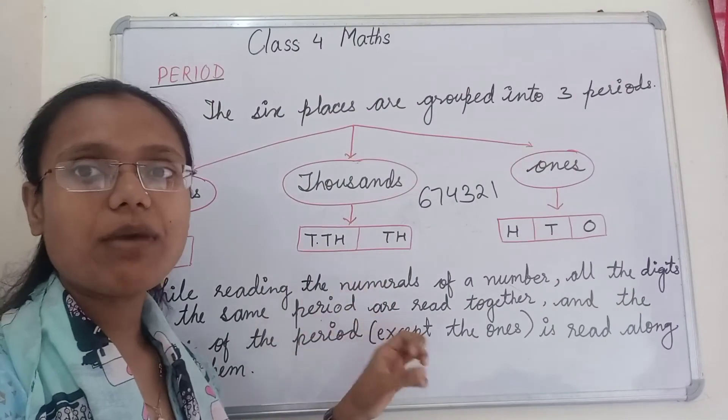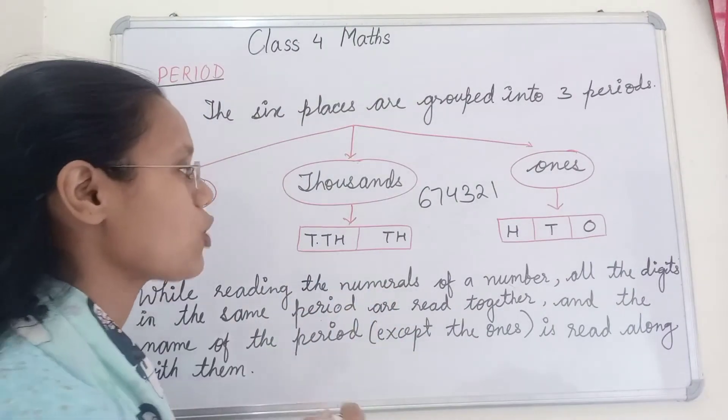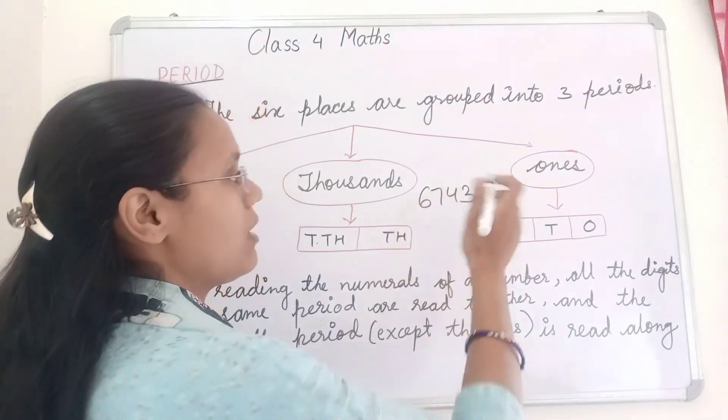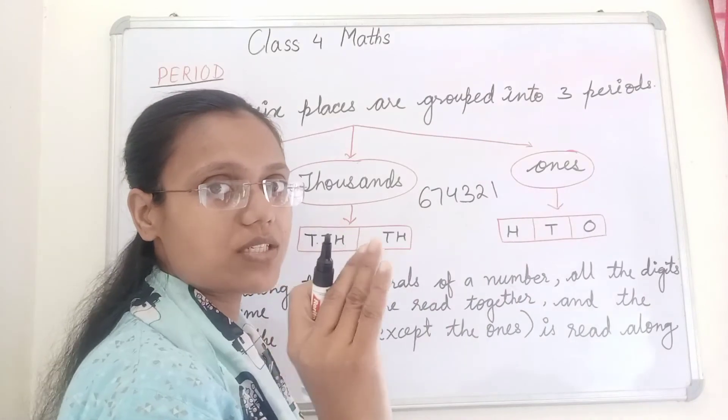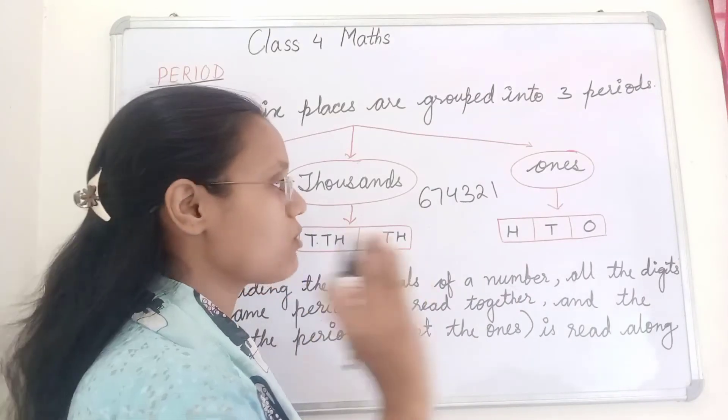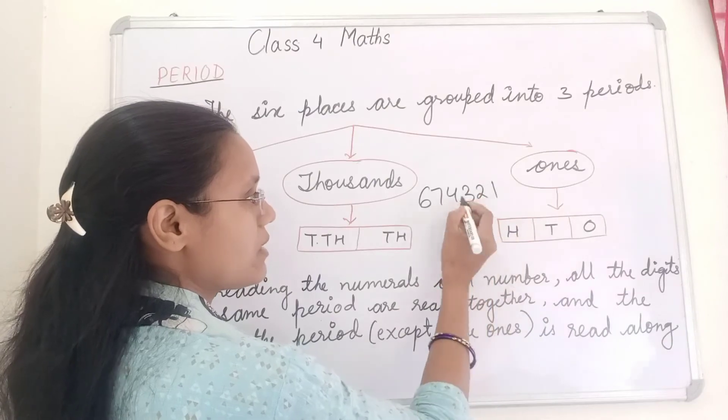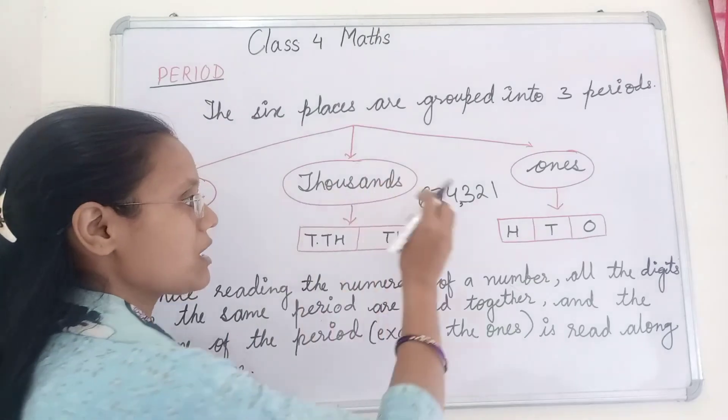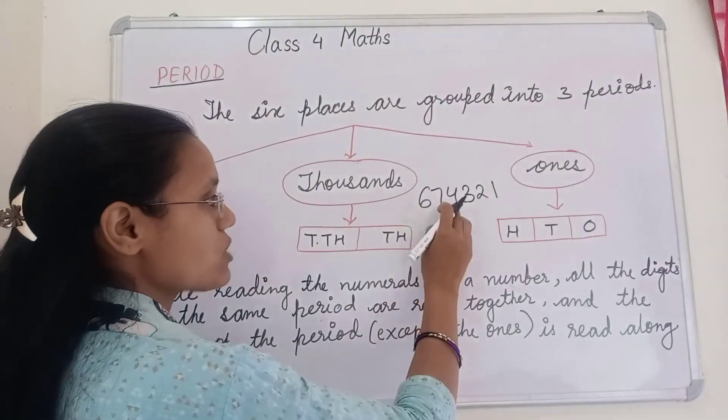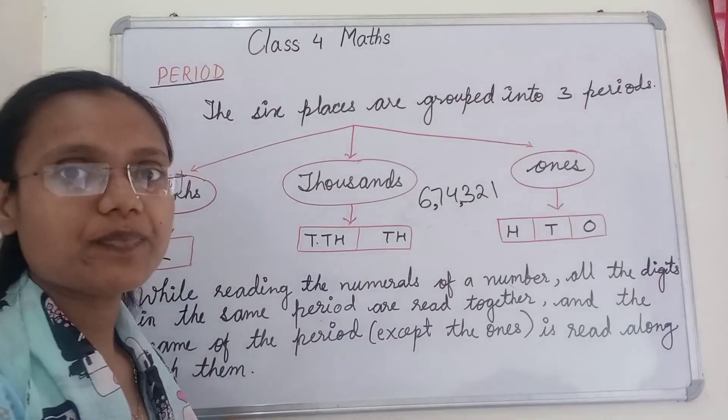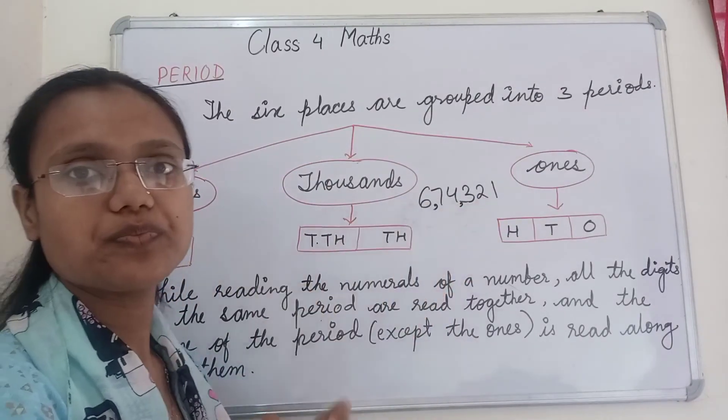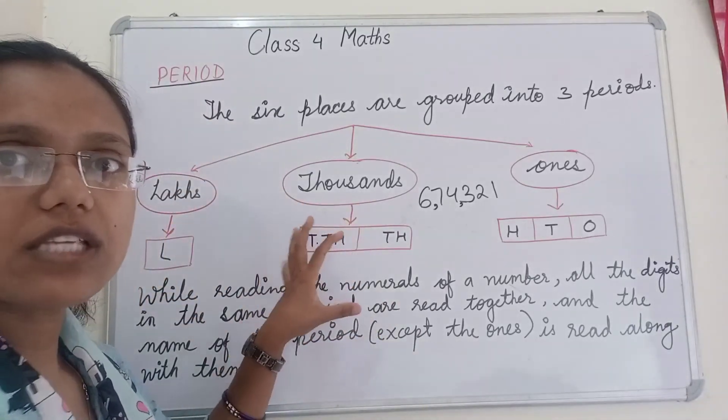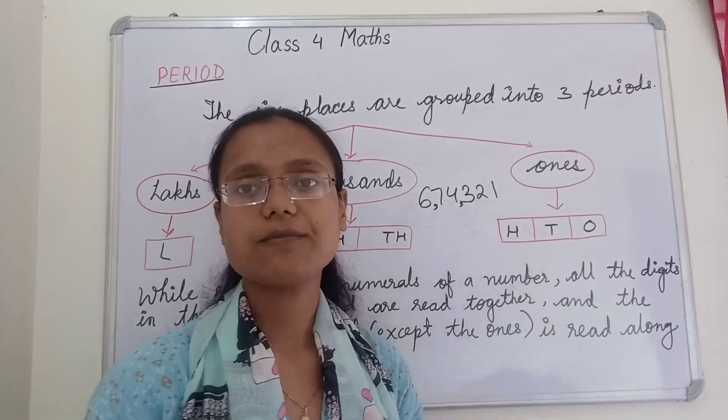How do we put commas? How do we put commas in the number? From the right hand side we will go. As you know that in one's period there are three digits, three places. Ones, tens, hundred will be separated by a comma. After that there is a period of thousand. Thousand period has two places, that is ten thousand and thousand, that will be separated by a comma. Here three numbers then two and one. This is how we are going to do, and based on this concept our next worksheet is there.